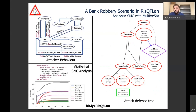So, similarly to whoFlan, in RiskFlan we express the constraints that a probabilistic attacker must satisfy to reach its goal, along with a probabilistic behavior given in terms of a simple process algebra — again, think of it as a probabilistic automaton.